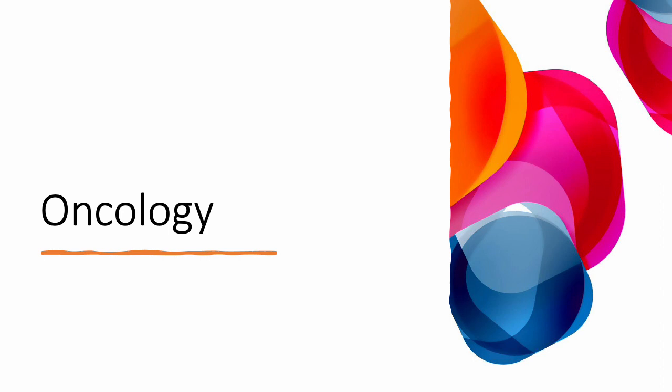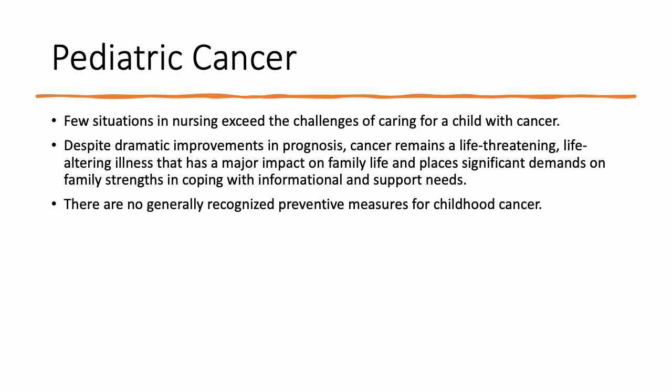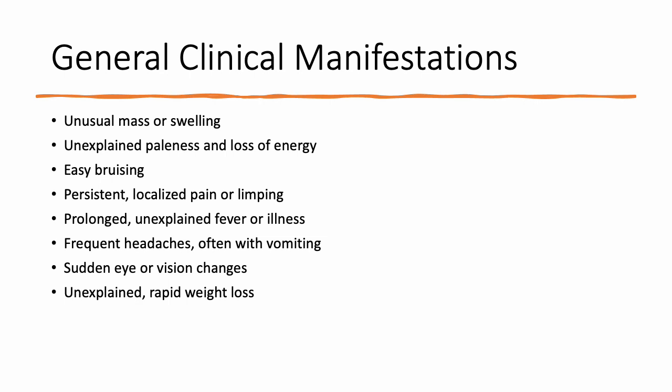Now let's talk a little bit about oncology. There are few situations as challenging as working with children and their families when they're going through cancer. We know that it's life-threatening and life-altering, and the major role of the nurse in these situations is to provide support to not only the patient but also to the family. These are some general clinical manifestations, or red flags, for any kind of new oncologic process. You can start to relate some of them back to the three cell lines, but also to anywhere where you have a mass growing that could put pressure on something.